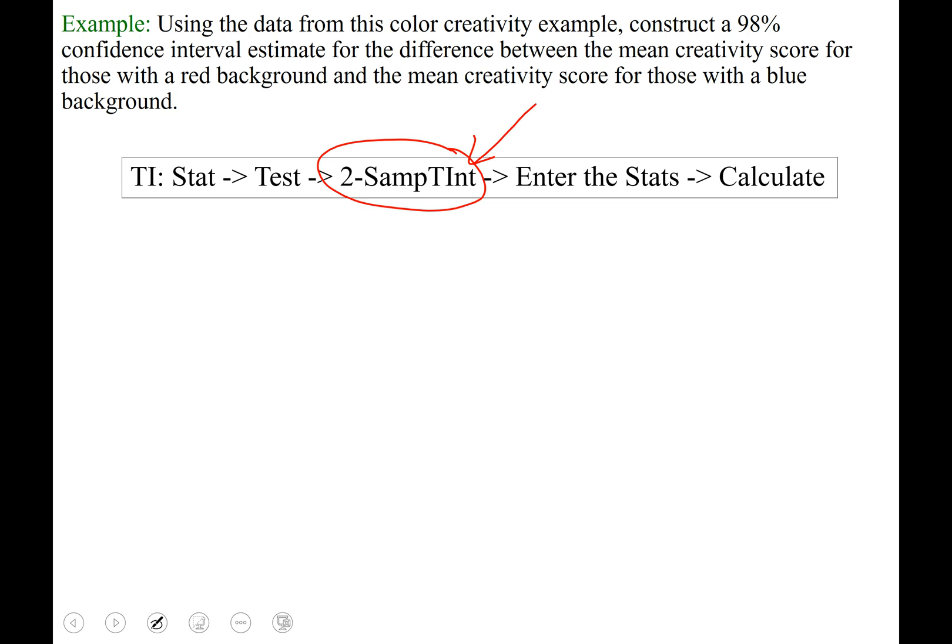Last time it was 95, so we need to change that to 0.98. Pooled, the answer is still no. The only time it would be yes if it says assume σ₁ and σ₂ are equal. Arrow down to calculate, run that program. And that first output line is our confidence interval. Negative 1.046 is the lower confidence limit, and negative 0.11242 is the upper confidence limit.